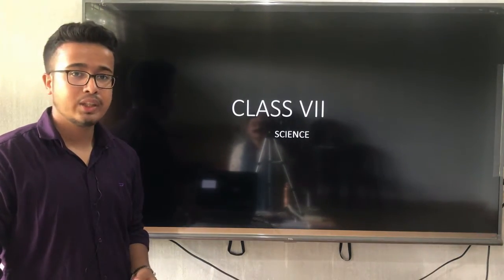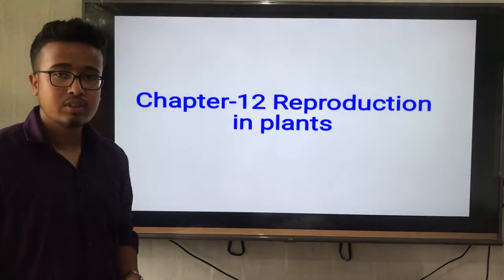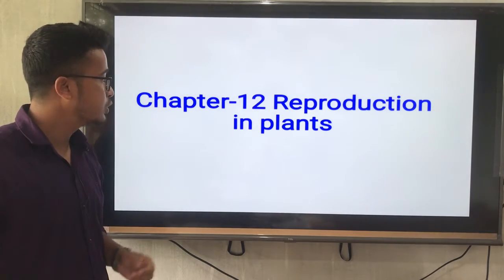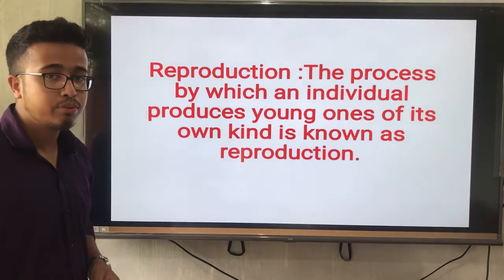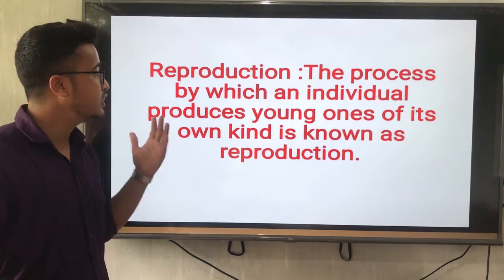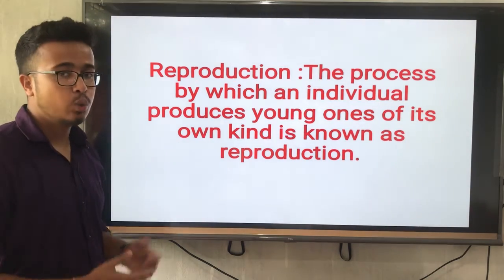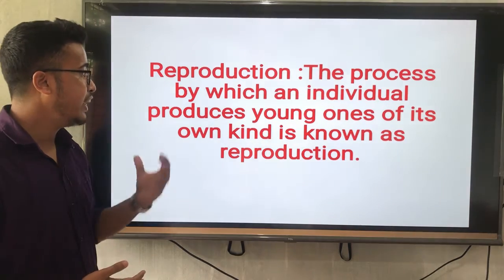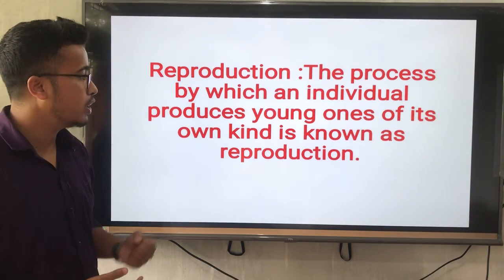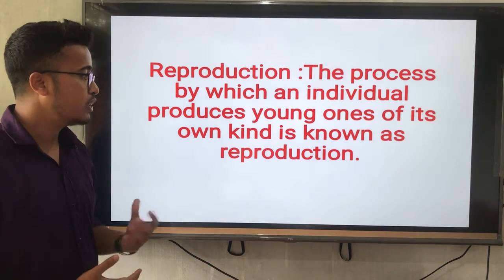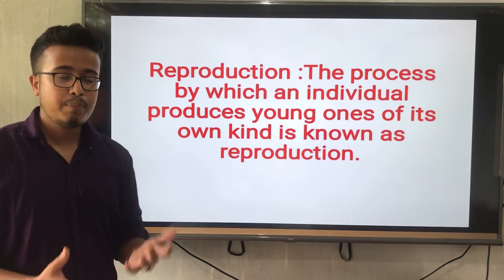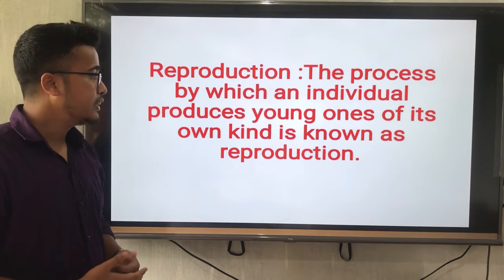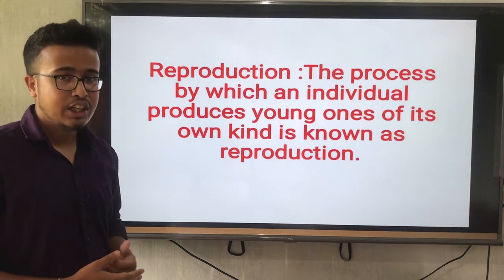Today, we will start a new chapter — Chapter 12 — and the name of the chapter is Reproduction in Plants. First of all, we will learn the definition of reproduction. Reproduction means the process by which an individual produces young ones of its own kind is known as reproduction.